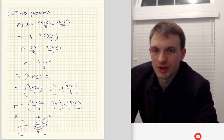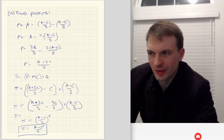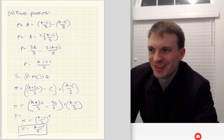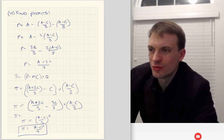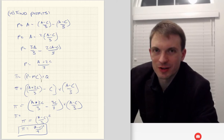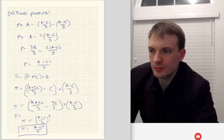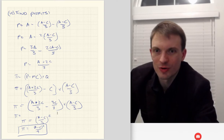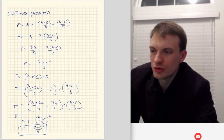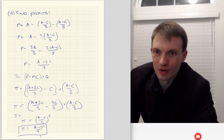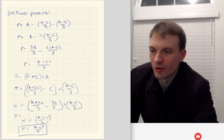We can find the profits that result. To find profits, we need price. Using the demand curve: P equals A minus two times A minus C over three. Running through this work, the price is going to be A plus 2C over three. Then our profit is price minus marginal cost times quantity. Working through the algebra, you will get profit equals A minus C over three squared, or A minus C squared over nine — our Cournot individual firm profits.